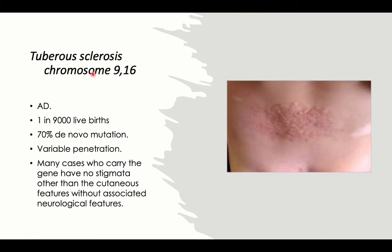Mutations for tuberous sclerosis are present on chromosomes 9 and 16, giving us gene 1 and gene 2 for tuberous sclerosis. We also have variable penetrance, and many cases who carry the gene have no stigmata other than cutaneous features, like neurofibromatosis. Some may show just cutaneous manifestations without neurological features, while others can present with intractable neurological features — a spectrum and variable expression of the disease.